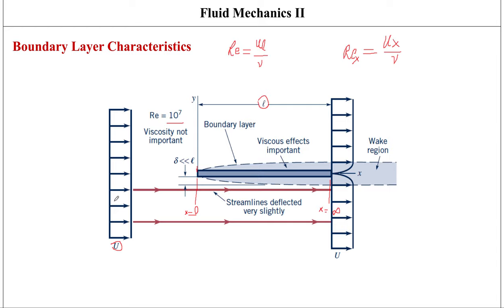The velocity beyond the boundary layer — outside of it — is going to be the same as the upstream velocity U. That is the case except when you come closer to the plate inside the boundary layer, where the fluid sticks to the surface due to the no-slip condition so velocity is zero, and then some velocity profile exists until the velocity essentially becomes equal to the upstream velocity, at which point the boundary layer ends.